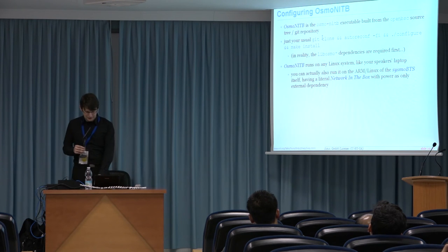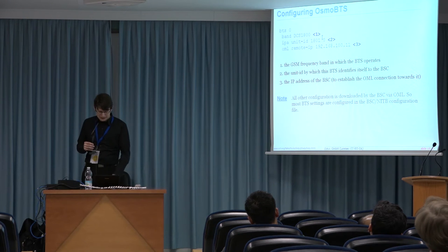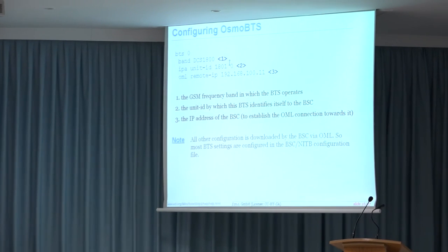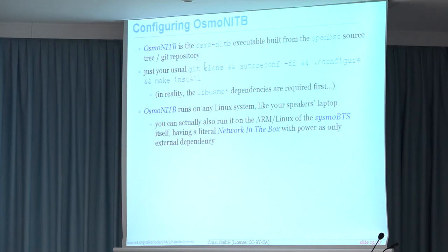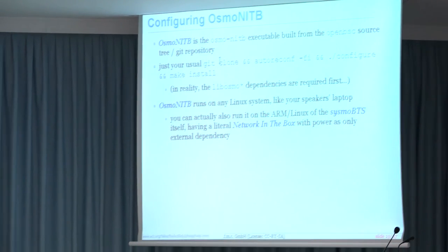The BTS is the client, the network in the box is the server. All other configuration parameters — and there are plenty — are downloaded by the BSC over the OML interface after connection. The idea is that BTSs have minimal local configuration; you deploy them in the field, they connect to the BSC, and all parameters like transmit frequency and power are sent over OML. The Osmo NITB can run on any Linux device — even the embedded ARM core inside the BTS, since the executable is only about 300 kilobytes.